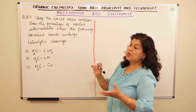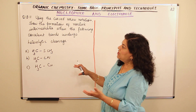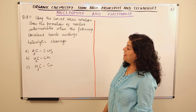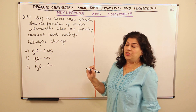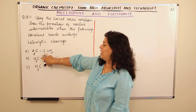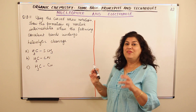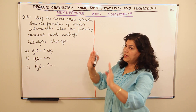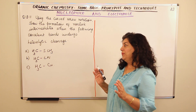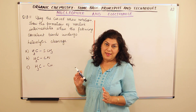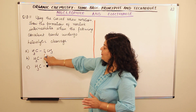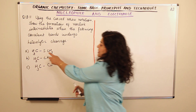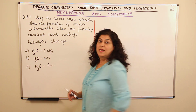We have to show using arrows how heterolytic cleavage takes place and what species are formed. The first part A is CH3-S-CH3, where the bond breaking is between carbon and sulphur. Sulphur is more electronegative than carbon, so in heterolytic cleavage the more electronegative atom pulls the electrons towards itself.